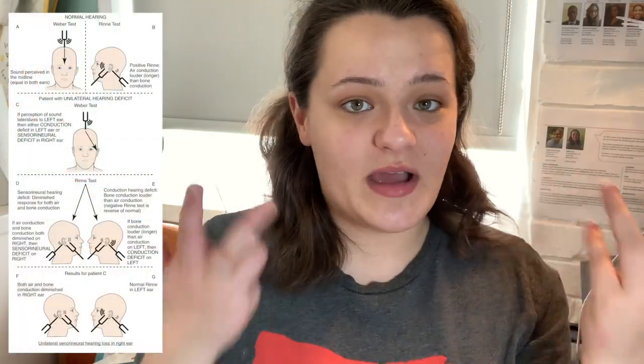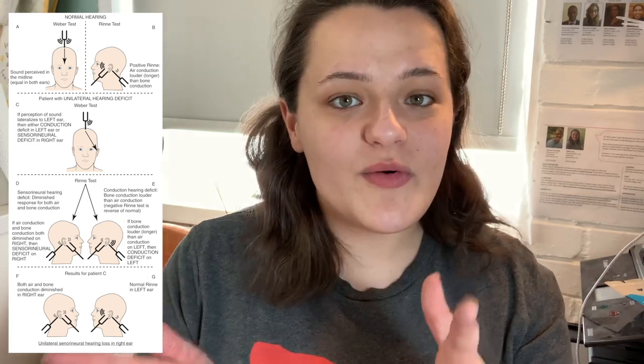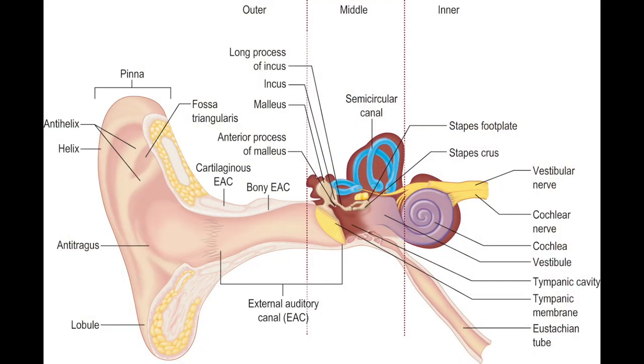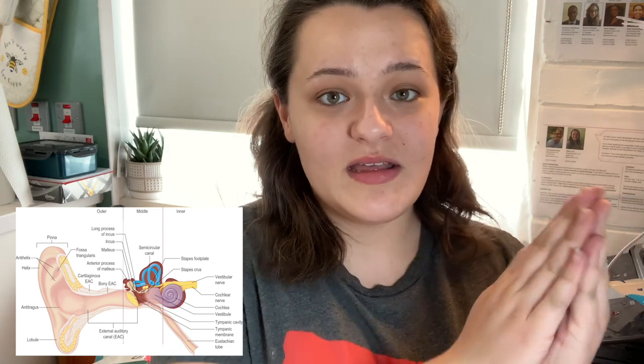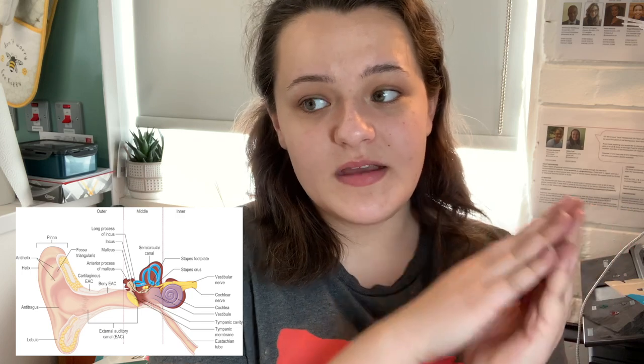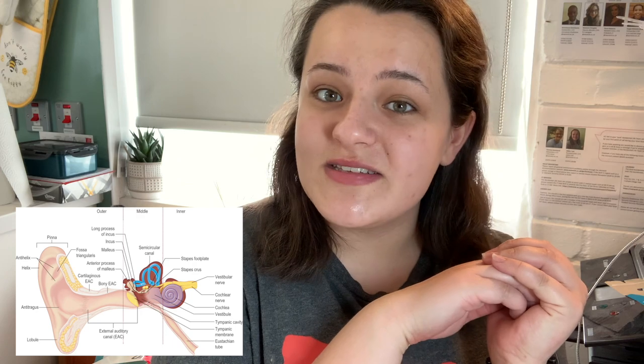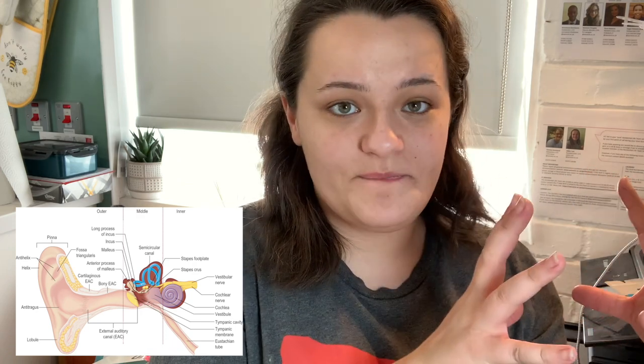There's one final part of the ear examination we haven't talked about — that's Rinne's and Weber's test. There's a quick method I use for interpreting these results, as they can be really confusing. Let's think about the anatomy of the ear: we have the external, the middle, and the internal part of the ear. The neural part of hearing does not kick in until we get to the internal part — this is where the cochlea is. So sensorineural hearing loss affects that part of the ear. The external and middle parts of the ear rely on conduction — air conduction in the external ear, and bone conduction in the middle ear. So anything affecting those sections would be conductive hearing loss. Sensorineural versus conductive hearing loss — that's how I interpret it at a pinch.